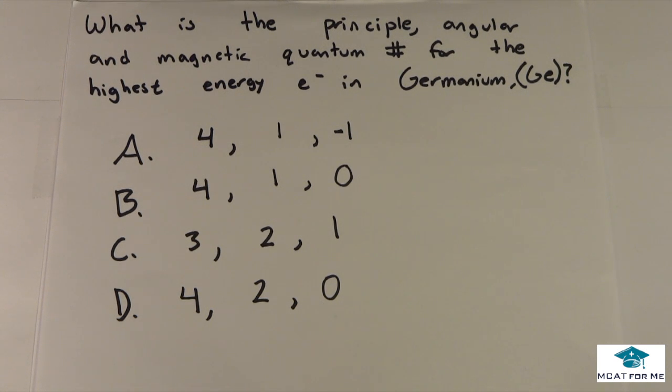So today we have a chemistry question of the day, and this one is asking, what is the principal, angular, and magnetic quantum number for the highest energy electron in germanium?